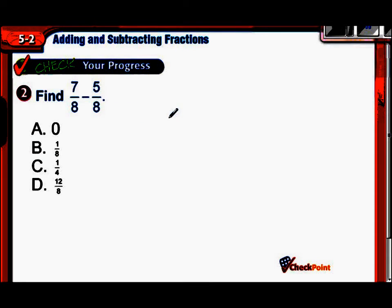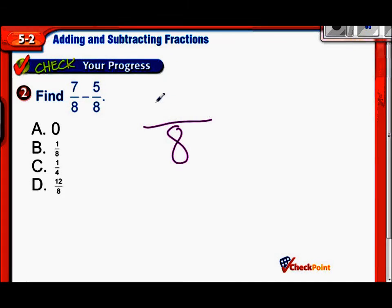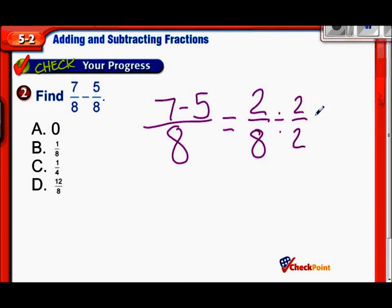Now we have seven-eighths take away five-eighths. So eight is our denominator and we're simply subtracting seven minus five. Seven minus five is, of course, two. So our answer is two-eighths. However, if you look over here, two-eighths is not a choice. Do you realize why? Well, right here, two-eighths is not simplified. What we need to actually do is figure out the common factor, which in this case is two. So if we divide the numerator and denominator by two, we end up with a simplified fraction of one-fourth. And there we go. So seven-eighths take away five-eighths is actually one-fourth.